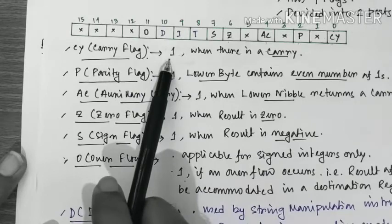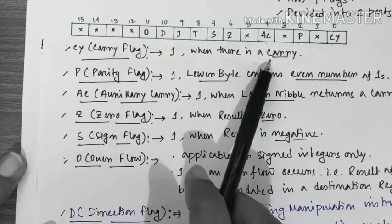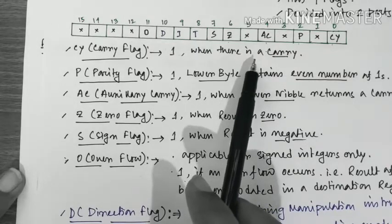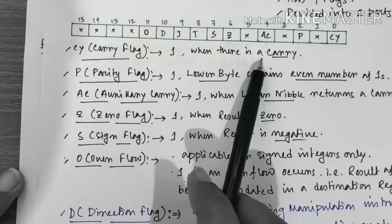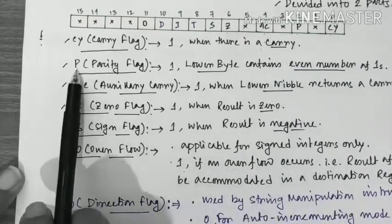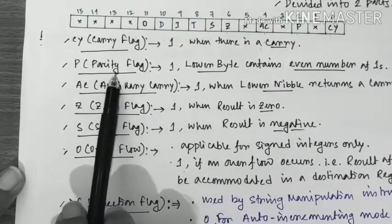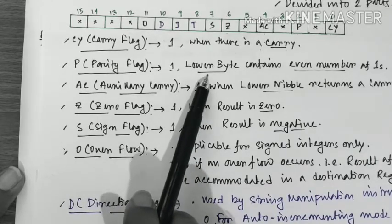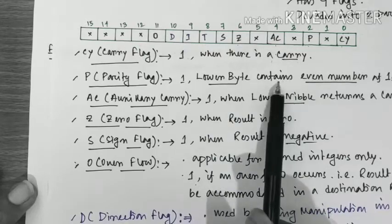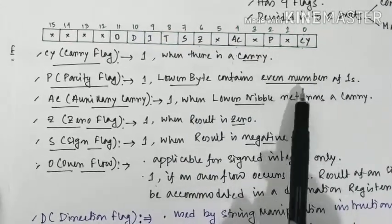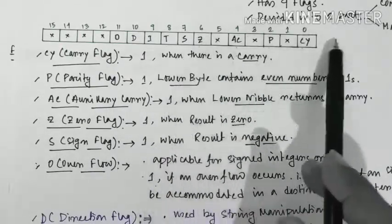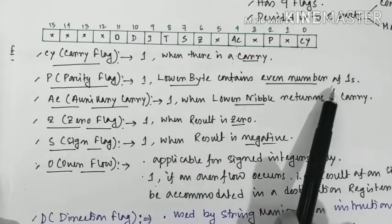The carry flag becomes set (1) when the result of an arithmetic operation — addition, subtraction, or similar — returns a carry, or in case of subtraction, returns a borrow. The parity flag becomes 1 only when the lower byte of the result contains an even number of 1s. Since the result may be 16 bits, we consider only the lower byte — it is essentially an even parity checker.